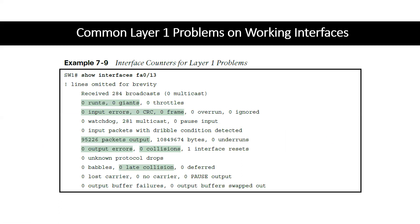Interfaces can be in an up/up state and still not be functioning properly. Common Layer 1 problems on working interfaces include runts, giants, input errors, CRC errors, output errors, and collisions. The FCS field in the Ethernet trailer, which we covered in Chapter 2, can produce errors that show up in the show interface command output.